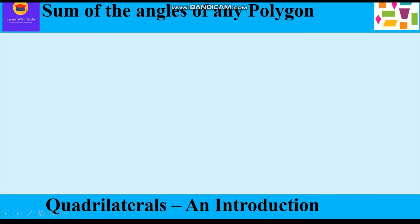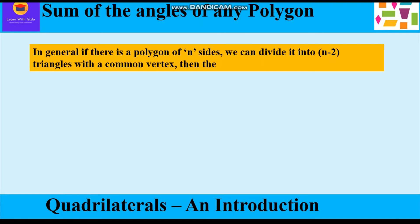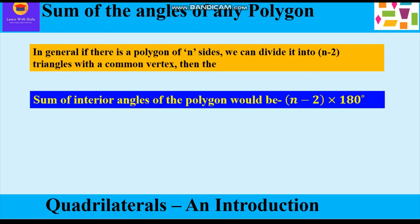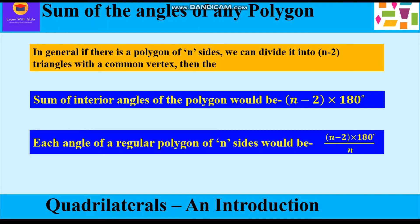Now we shall learn how to find the sum of all the angles of any polygon and each angle of a regular polygon. In general, if there is a polygon of N sides, we can divide it into (N − 2) triangles with a common vertex. The sum of interior angles of a polygon is given by the formula (N − 2) × 180°. To find each angle of a regular polygon of N sides, we divide the total sum by N: that is, (N − 2) × 180° ÷ N.